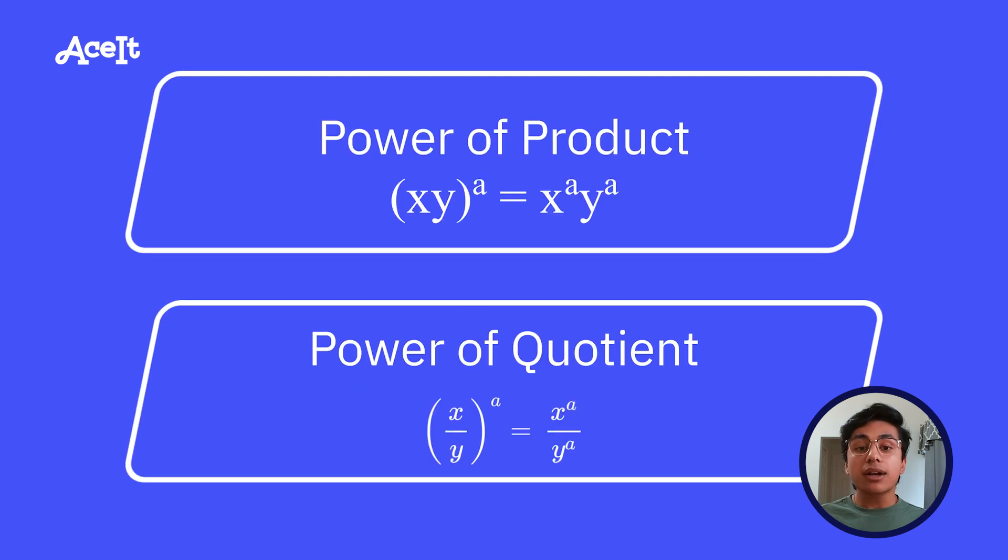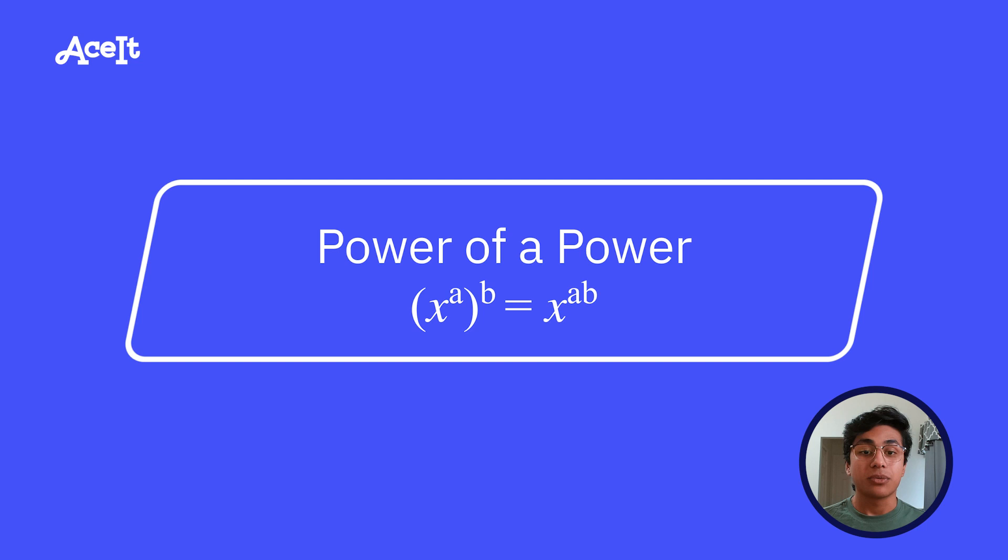Now we have the power of products and the power of quotient rules. These rules just establish that if you have two numbers being multiplied or divided, and you raise those numbers to a power, the exponent will be applied to both of those numbers. We're almost done with the rules, I promise. We now have the power of a power rule, which is when you're raising a number to a power twice. In this case, you would multiply the exponents. So if we have two squared, and we square that again, it's going to be the same as two to the fourth, or 16.